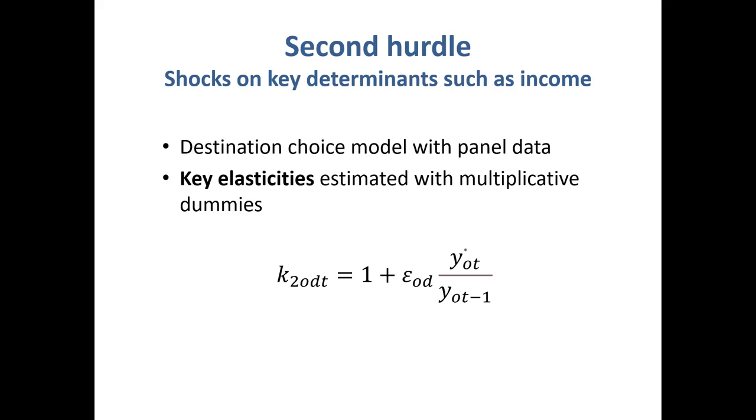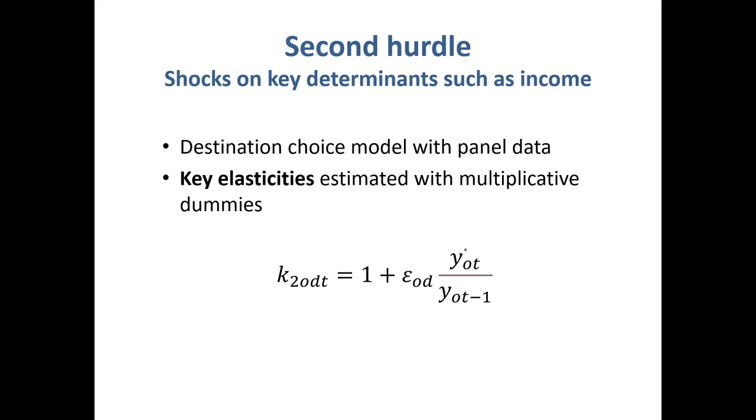Once the market is open, the number of arrivals depends on key determinants such as income. If the income has caught any kind of shock, then we can tune the number of arrivals employing elasticities, and they can be estimated with multiplicative dummies that are introduced in a destination choice model that can be estimated with panel data.